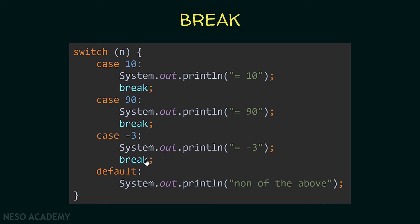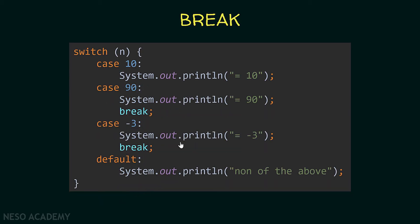So now as you can see, the switch statement is functioning similar to an if-else statement. And also if n is not equal to any of these, the default case will be executed. Since we are writing it at the end, we don't need to put a break statement — we will print 'none of the above', and the switch statement ends there. So we don't need a break statement.